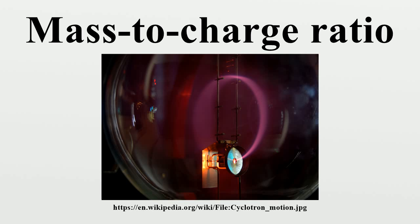In 1913, Thomson measured the mass-to-charge ratio of ions with an instrument he called a parabola spectrograph. Today, an instrument that measures the mass-to-charge ratio of charged particles is called a mass spectrometer.